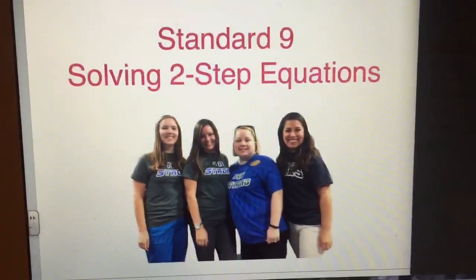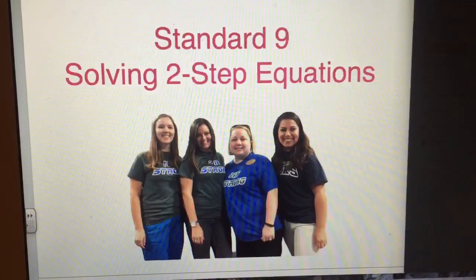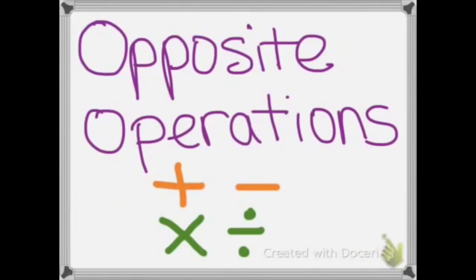We're going to solve two-step equations on standard 9. Remember, you use opposite operations. Adding and subtracting are opposite operations, and multiplying and dividing are opposite operations.